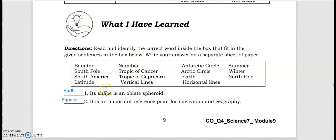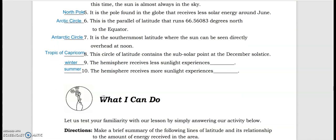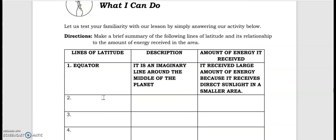For the 'What's More' and 'What I Have Learned' sections, please pause the video to check the answers shown on screen. For 'What I Can Do,' you will handle the lines of latitude activity on your own. From the PowerPoint slides, you can get the descriptions and the amount of energy each latitude receives. Basically, the arctic circle and antarctic circle receive a small amount of energy because they are hit by the sun's rays at a lower angle.